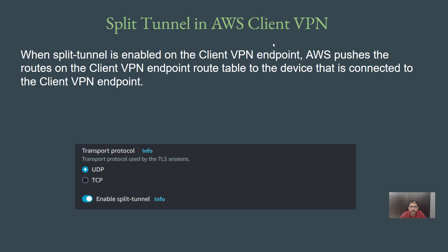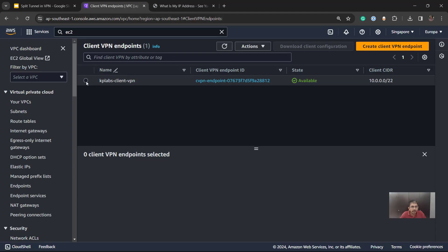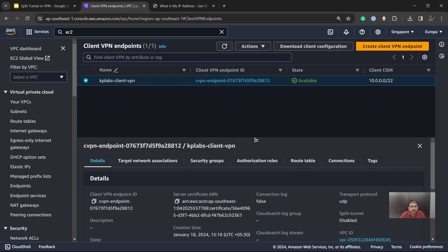To enable split tunnel, the configuration is very simple — you just enable it from the VPN configuration page. Once you do that, AWS will push only the routes set in the client VPN endpoint route table to the connected device. Let's look at both without and with split tunnel so we understand the true benefits. Currently I have a client VPN endpoint available, and this endpoint does not have split tunneling enabled.